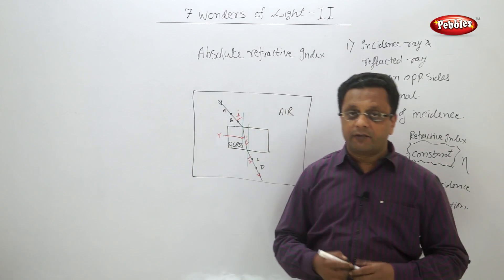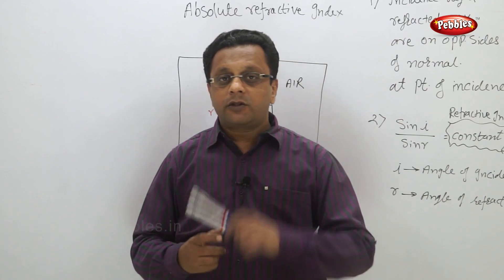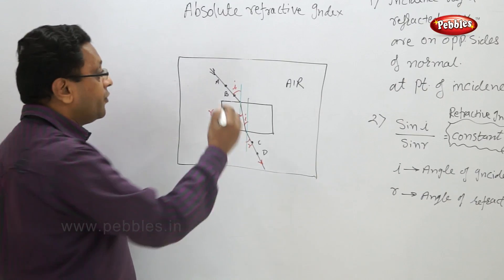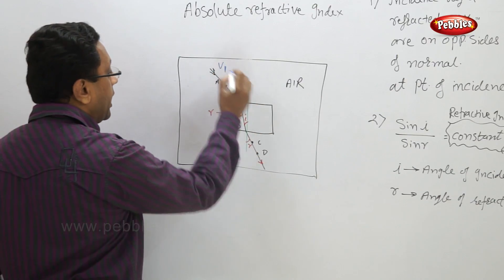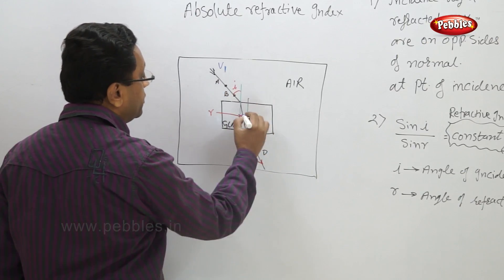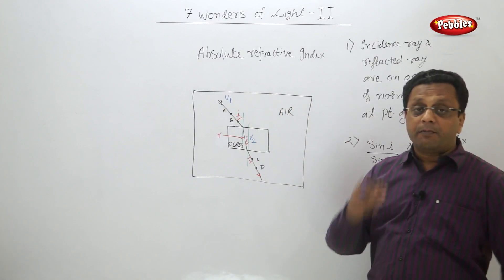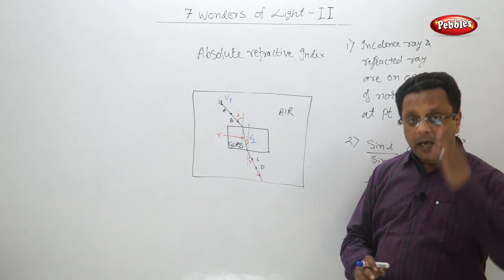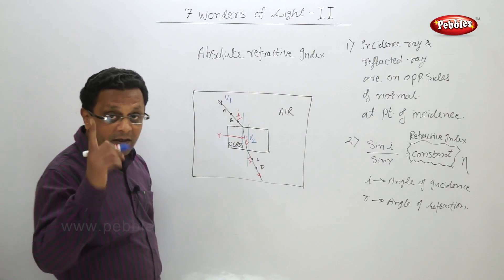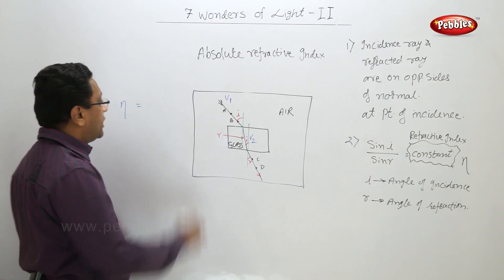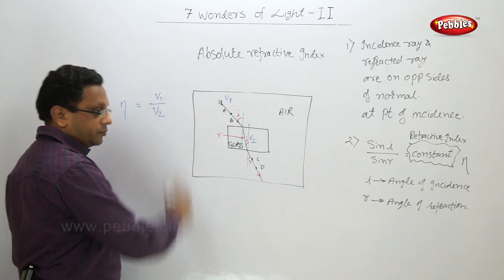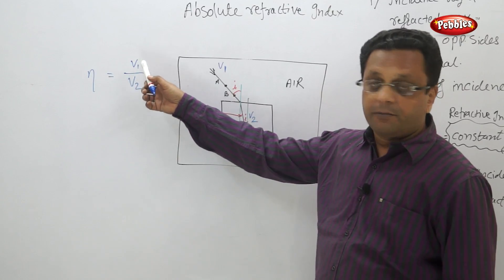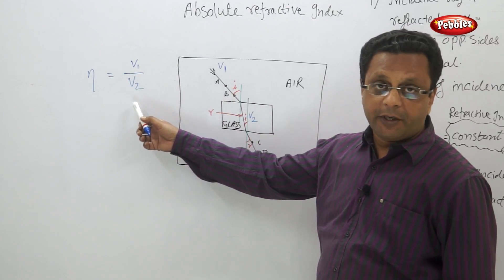From the velocity of light we can also find the refractive index. If light is traveling in the first medium (air) with velocity v1 and in the denser medium with velocity v2, the refractive index eta equals v1 upon v2. This is written as subscript 1n2, meaning the refractive index of medium 2 with respect to medium 1. Whenever the first medium is air or vacuum, you can simply write n2 — that is the absolute refractive index. Similarly, the refractive index of medium 1 with respect to medium 2 is v2 upon v1.